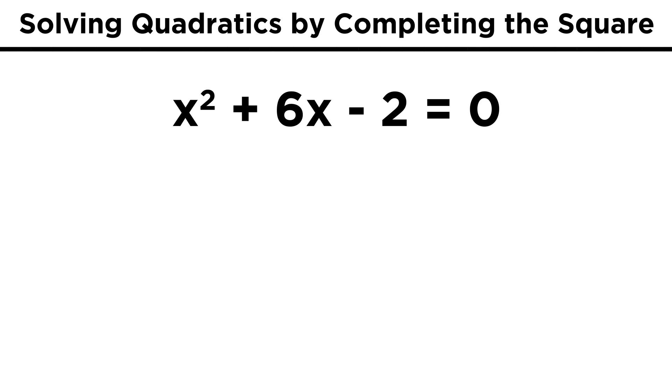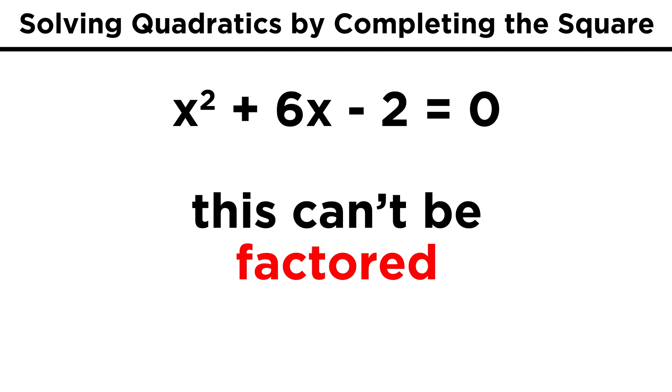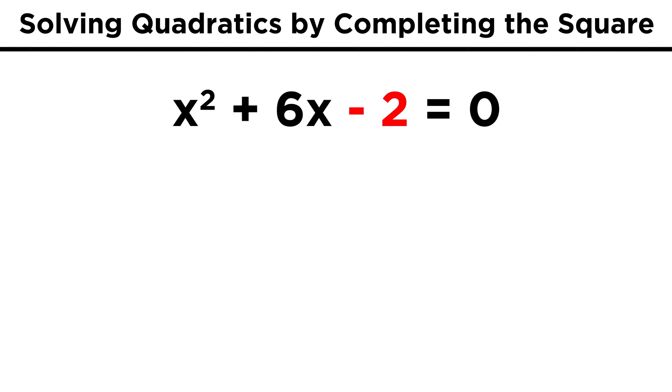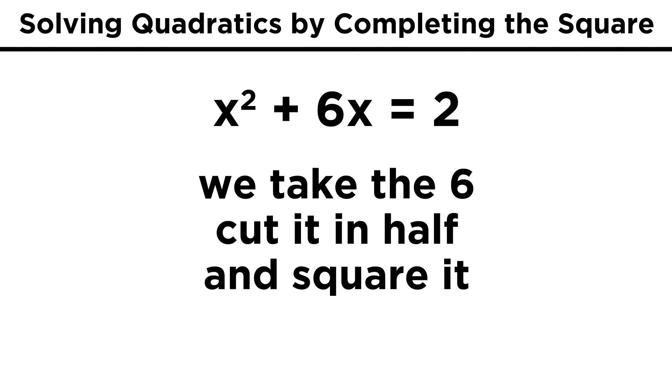Let's try another. Say we have x squared plus 6x minus 2 equals zero. Once again, we would quickly see that this can't be factored, so let's bring 2 to the other side. Now to complete the square, all we do is take this coefficient of x, in this case 6, and we must cut it in half, and then square it.